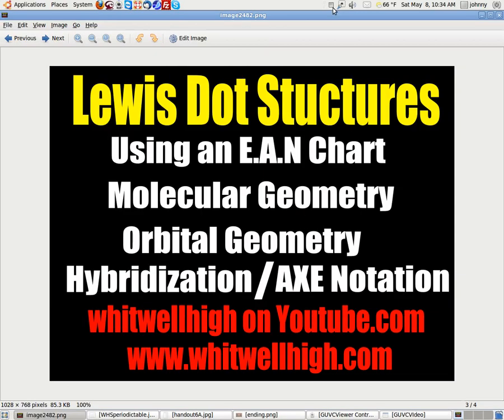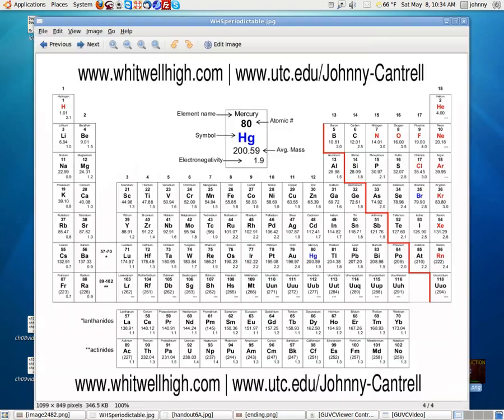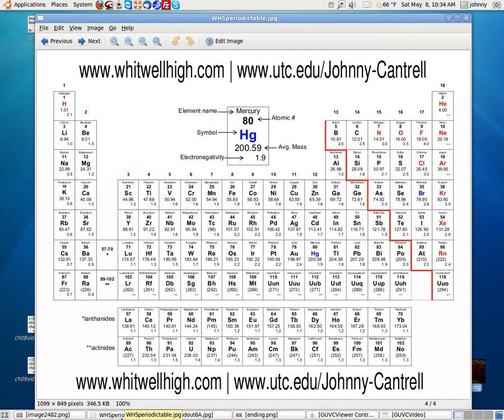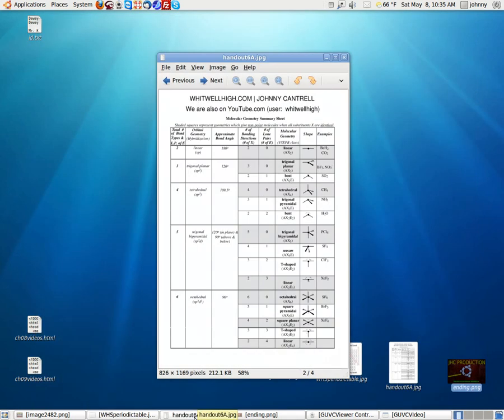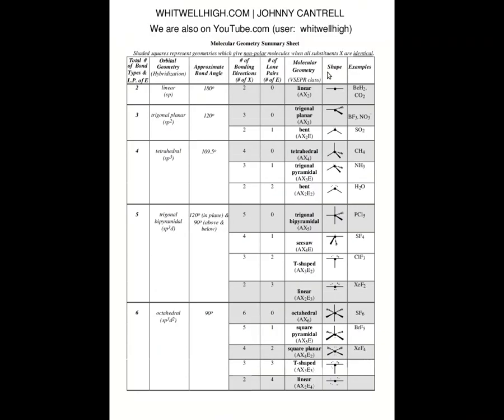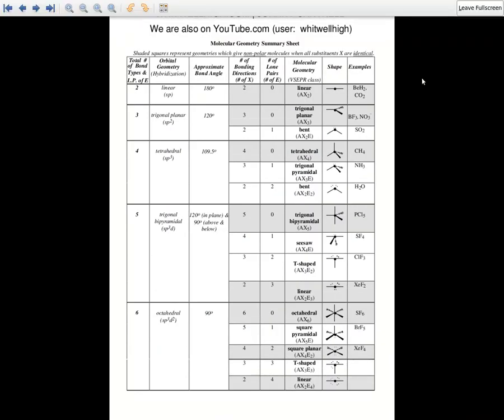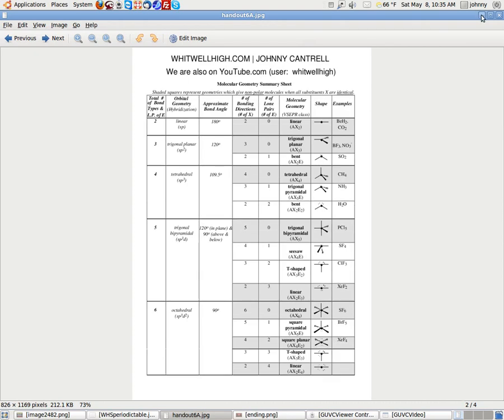Now, before you can get started, you're going to need two handouts. One handout you'll need is a periodic table. If you don't have one, you'll get one from my website that you see here. You'll also need handout 6A, which you see here. I'll maximize it so you can see it. It will help with the molecular geometry, the orbital geometry, and the hybridization, and the ax notation. Alright, so let's go ahead and get started.